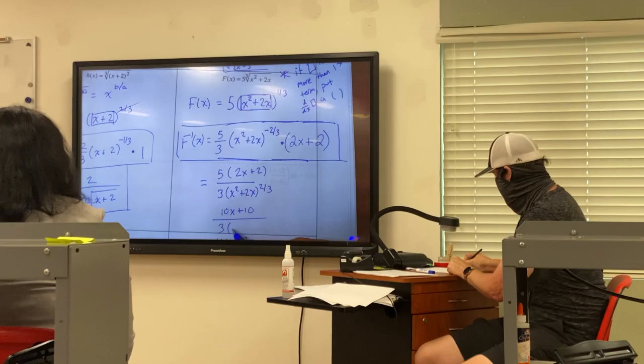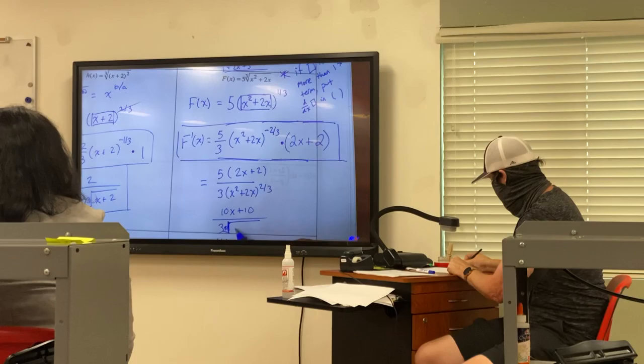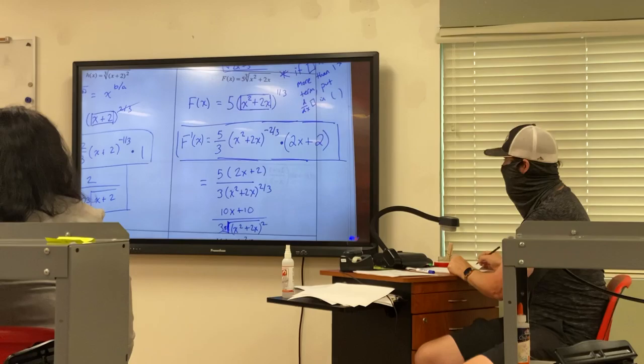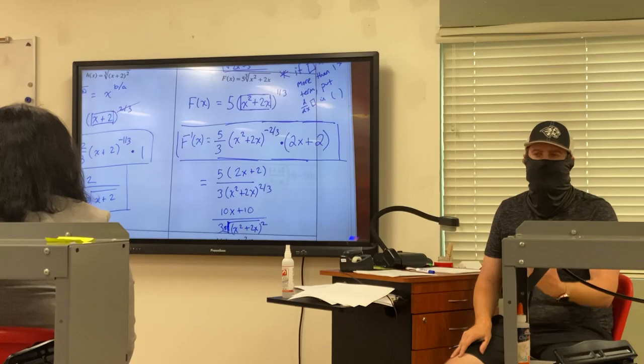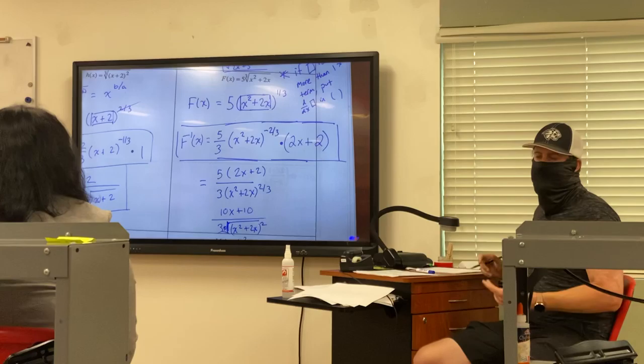They distributed that over 3 times, I guess, cube root like that, cube root of x squared plus 2x to the second. That's kind of mean. They could have even been more mean in my opinion though, because could they then factor out a 10?